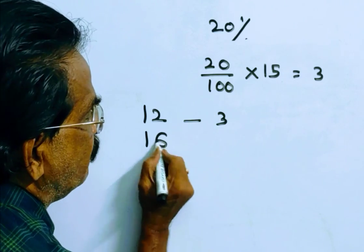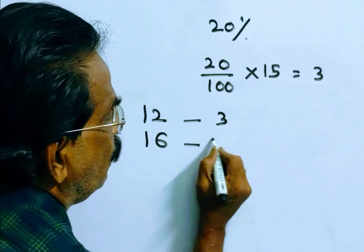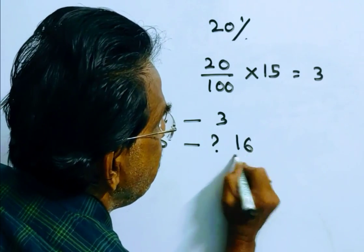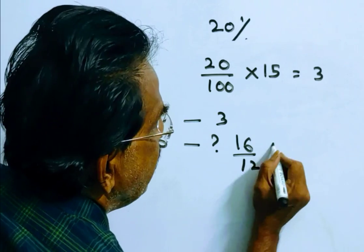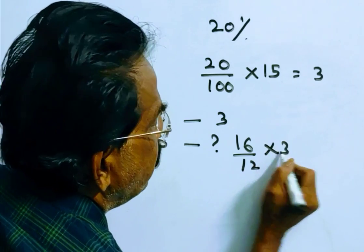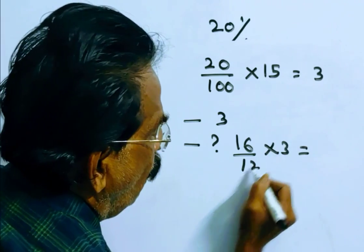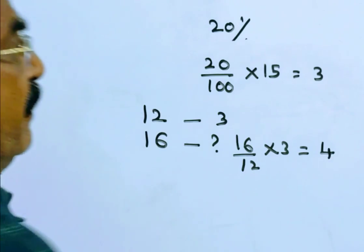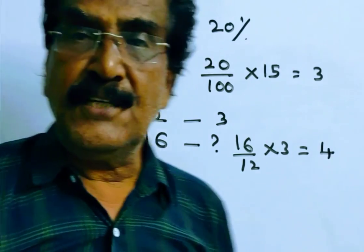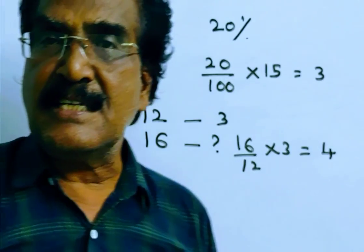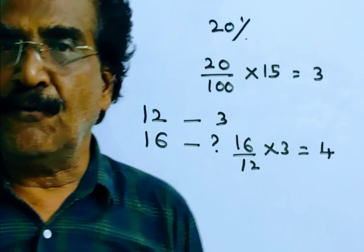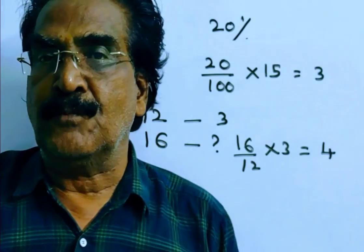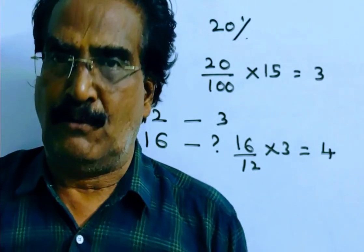Now, the reduced price of 16 mangoes is 16 by 12 into 3, which equals 4 rupees. So 4 rupees is the reduced price of 16 mangoes.